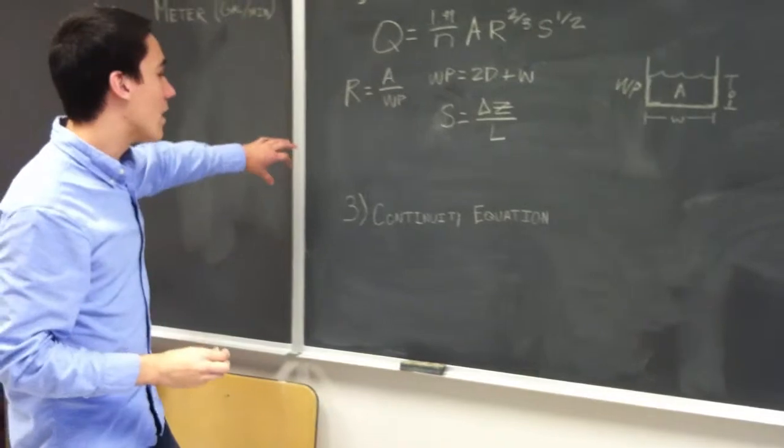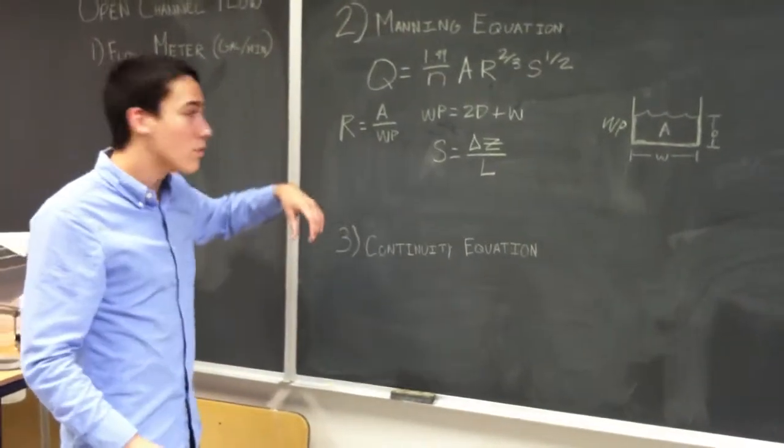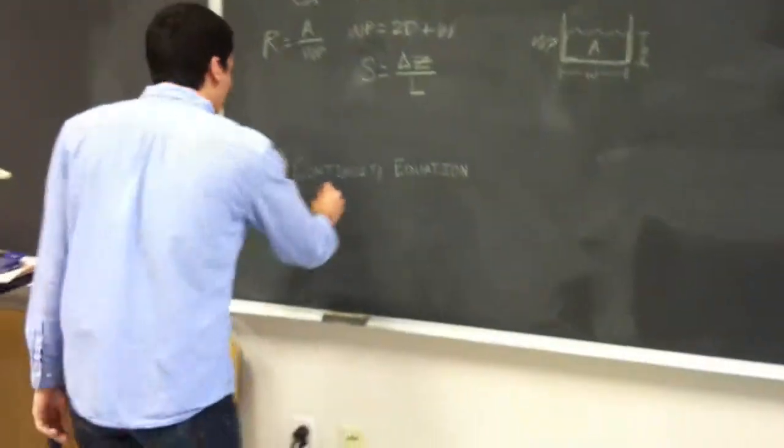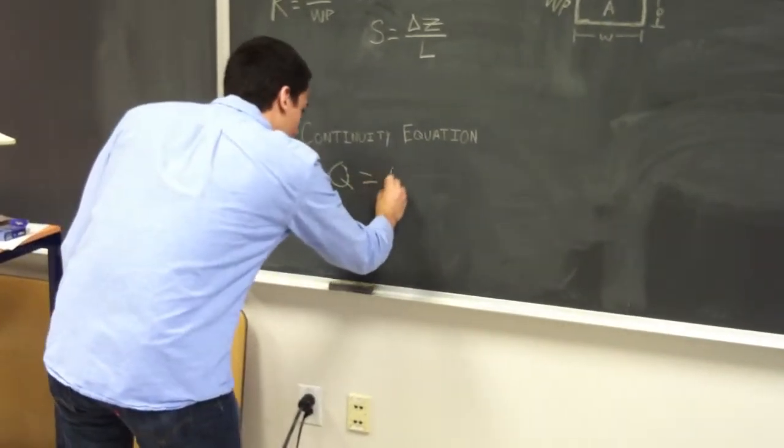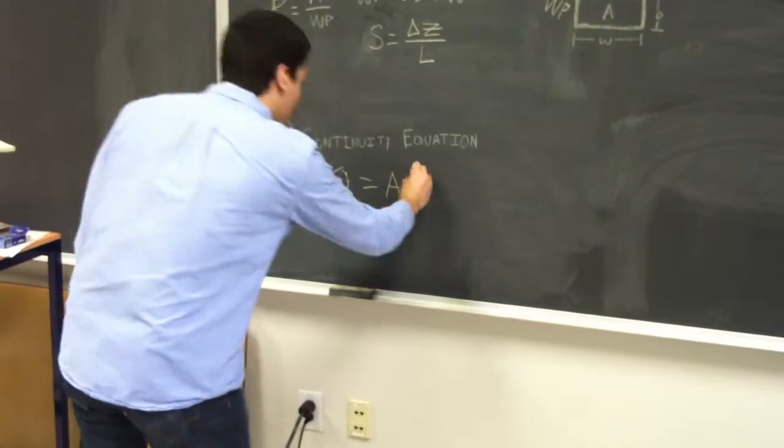All right, and so then the other equation we can use to compare flow is your continuity equation, and that's just Q is equal to your area times your velocity.